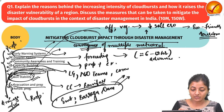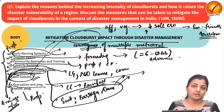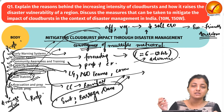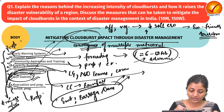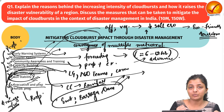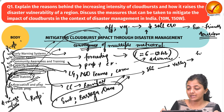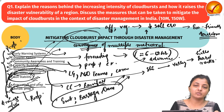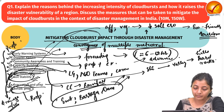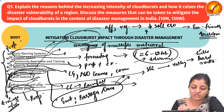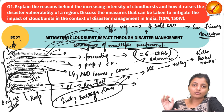Response measures include evacuation and preparedness: when Doppler radars indicate a cloudburst is likely within 6 to 12 hours, the population should be evacuated from valleys to stable ground like hills or hard rock areas. Once the disaster is over, proper rehabilitation programs should be implemented for sustainable livelihoods. These are the key mitigation measures for cloudburst impact through disaster management.